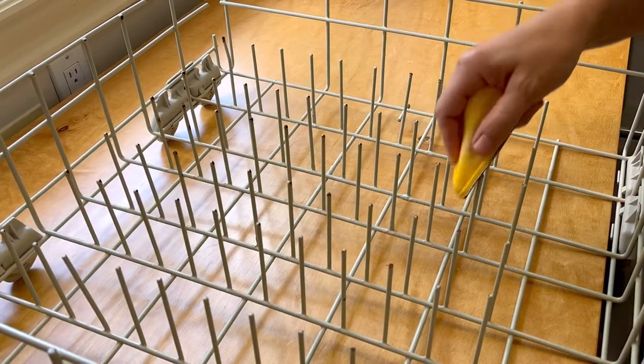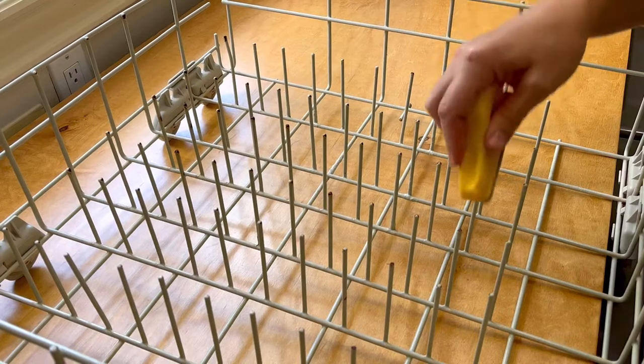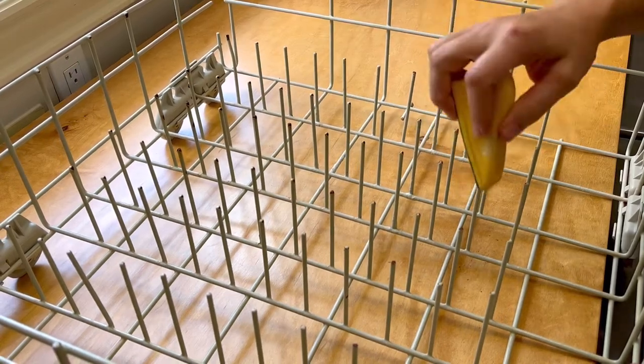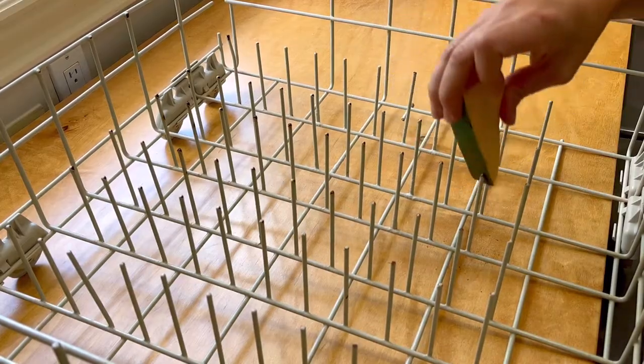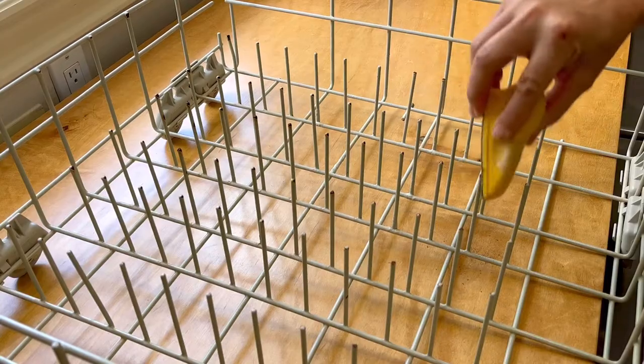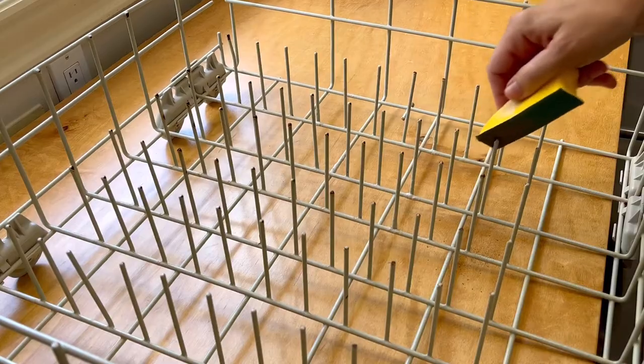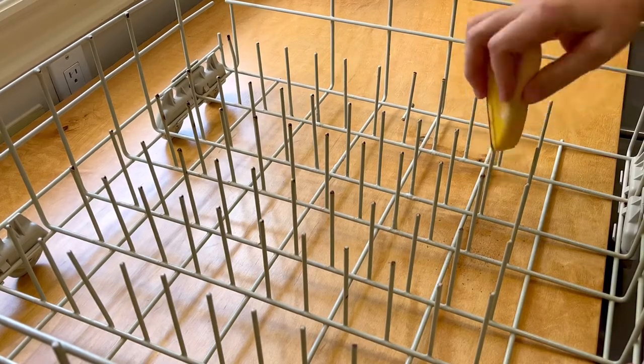Once your dishwasher racks are clean, it is time to remove them and start sanding away any of the rusty spots that you find on your dishwasher rack. Don't forget to do the top and the bottom of each rack because often you'll find rusty spots on the bottom of the rack you don't even notice are there. So sanding and repairing your dishwasher rack can save you hundreds of dollars.